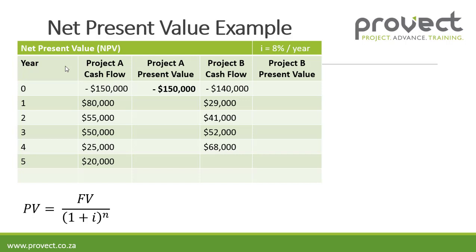In year 0, we've got minus $150,000. For year 1, the present value is $80,000 — our future value — divided by (1 plus 0.08) to the power 1. For year 2, it's $55,000 divided by (1 plus 0.08) to the power 2.